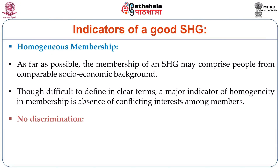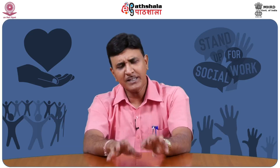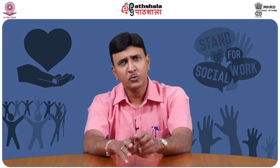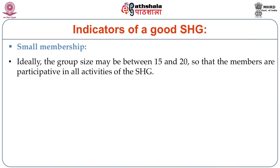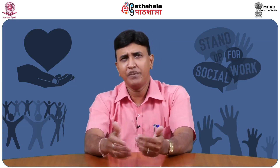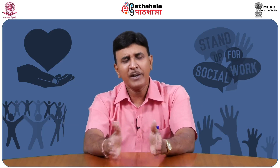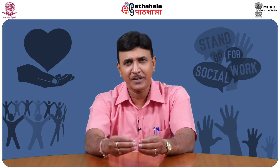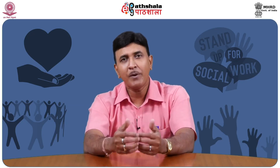There should be no discrimination among members based on caste, religion, or political affiliations. The group should be framed with as much similarity as possible so that such discrimination can be avoided. Small membership is another indicator — ideally 10 to 20, with the ideal group size being 15 to 20 so that members are participative in all activities. If the number is too large, absenteeism will occur. In a smaller group, members get the opportunity to speak openly and freely. However, the group should not be too small that financial transactions become insignificant — with 15 to 20 members, the contribution and loan amounts become significant.